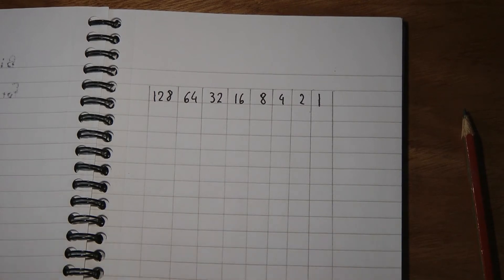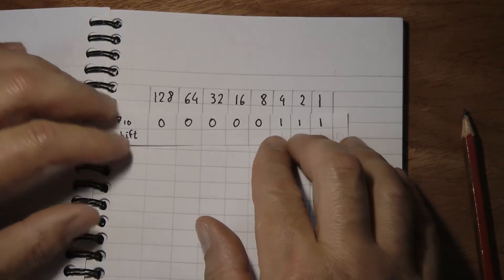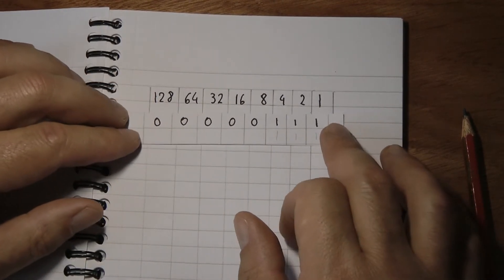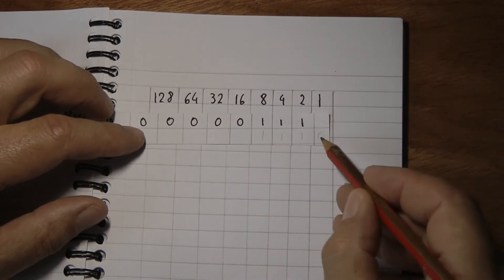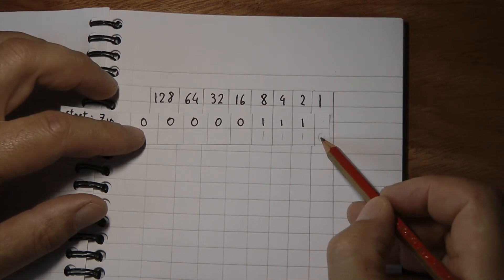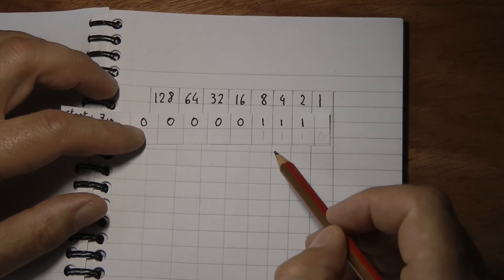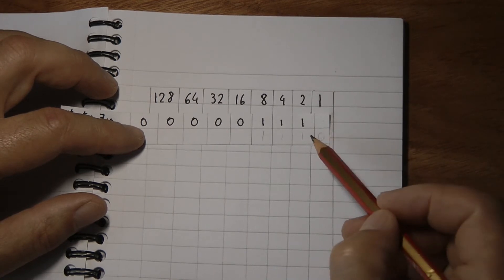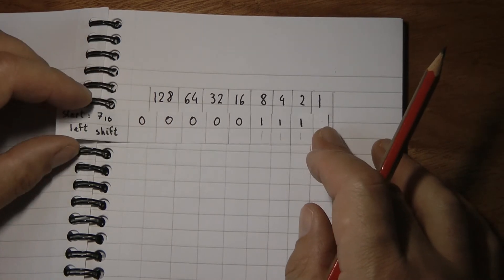Let's have a starting value of 7. 4 plus 2 plus 1. If I shift this to the left, like so, and add a 0 in my least significant bit, my number becomes 8 plus 2, 10 plus 4, 14. We've multiplied the number by 2 by shifting the bits to the left.